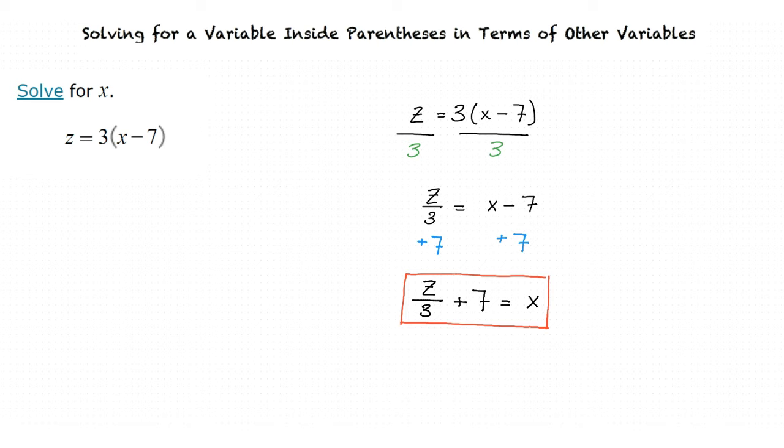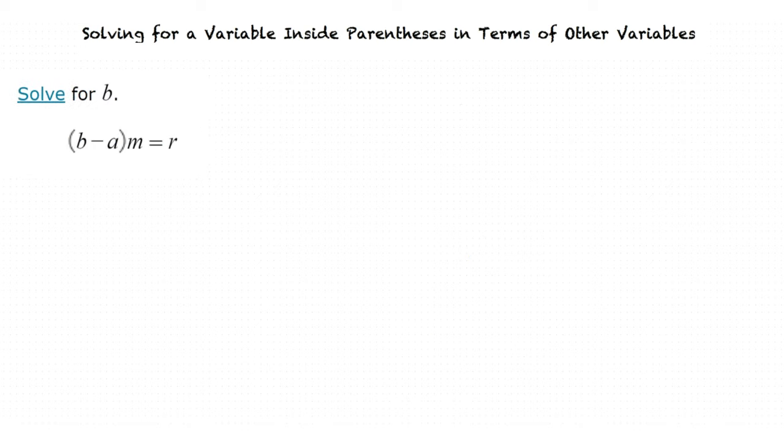Let's do one more example. In this example, we're being asked to solve for b in the equation b minus a all times m equals r. How do you think we should approach this problem? Wow, this problem has a lot of variables. That's okay. Just approach it piece by piece.